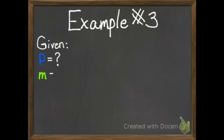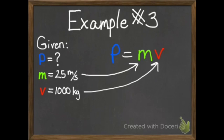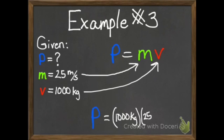Here is our given information: we don't know the momentum — that's what we need to find. We have the velocity, which is 25 meters per second, and we have the mass, which is 1,000 kilograms. We plug those numbers into P equals MV: 1,000 kilograms multiplied by 25 meters per second gives us 25,000 kilogram meters per second. That is the momentum of the car — the quantity of motion of that car.